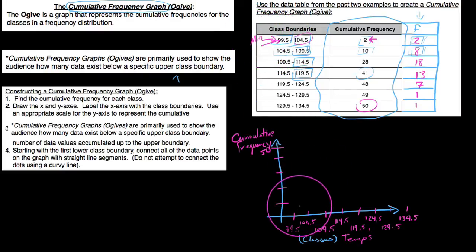So it's very important that when you make a cumulative frequency graph that this first dot here is zero, because you haven't counted anything up yet. By the time you get to the end of this first class, which is 104.5 degrees, then you've reached two total states. So that's where we put the dot for two.